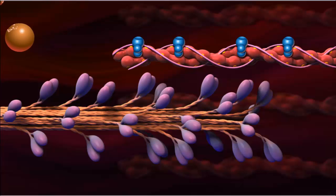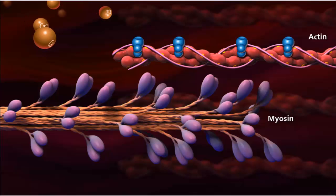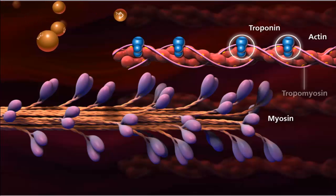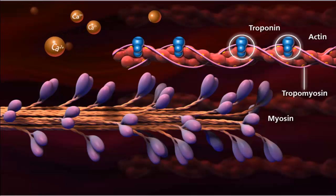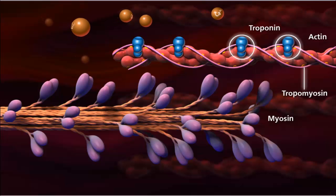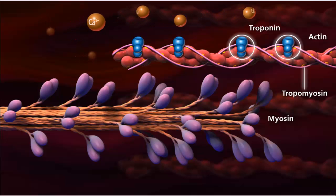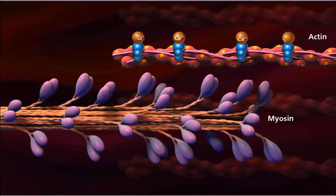Muscle contractions are controlled by the actions of calcium. The thin actin filaments are associated with regulatory proteins called troponin and tropomyosin. When the muscle is relaxed, tropomyosin blocks the cross-bridge binding sites on actin. When calcium ion levels are high enough and ATP is present, calcium ions bind to the troponin, which displaces tropomyosin, exposing the myosin binding sites on actin.